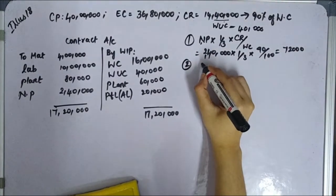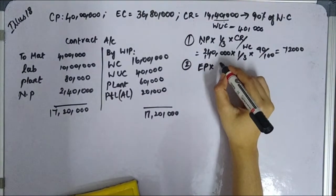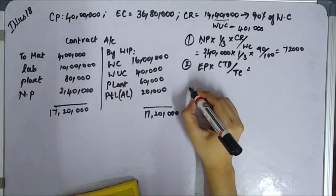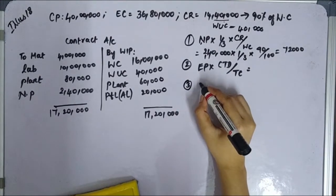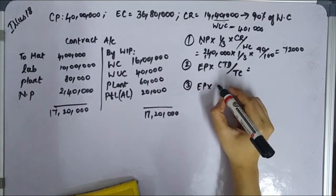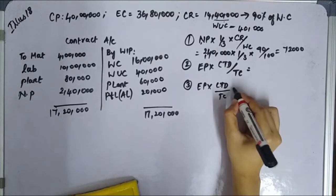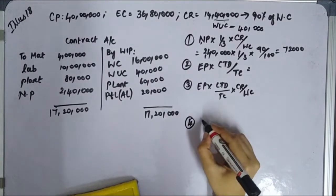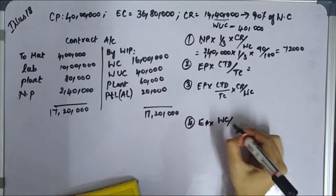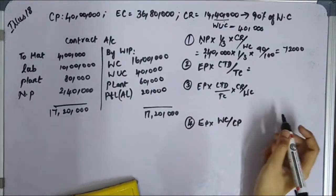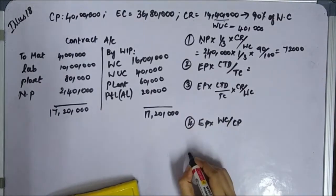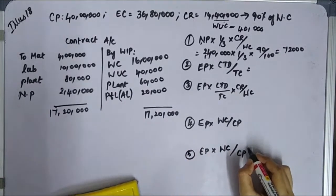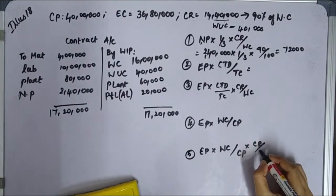The formulas for amount credited to P&L are: (1) estimated profit × cost to date divided by total cost; (2) estimated profit × cost to date divided by total cost × cash received divided by work certified; (3) estimated profit × work certified divided by contract price; (4) estimated profit × work certified divided by contract price × cash received divided by work certified.